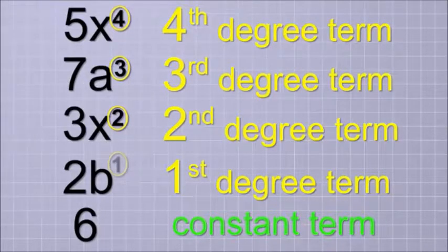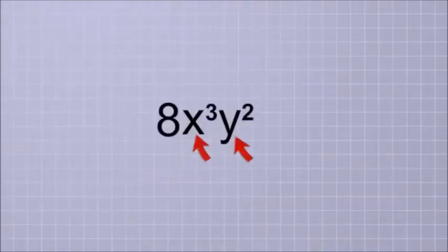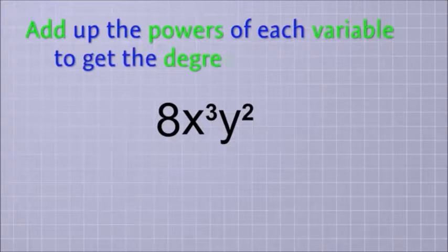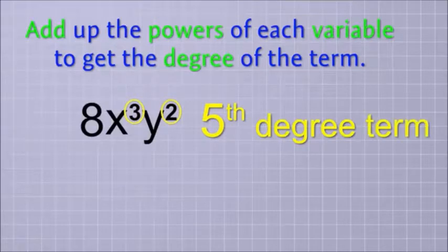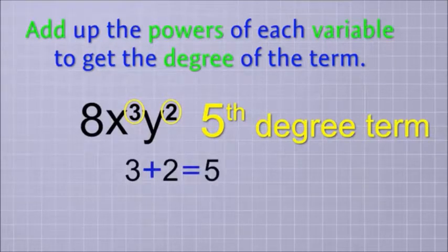Things are a little more complicated when you have terms with more than one variable. In that case, you add up the powers of each variable to get the degree of the term. Since the powers in this term are 3 and 2, it's a 5th degree term because 3 plus 2 equals 5.